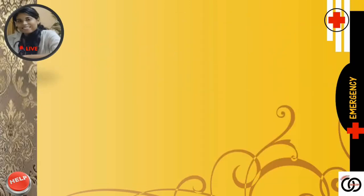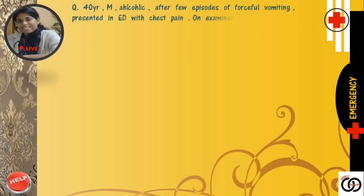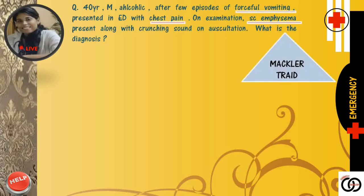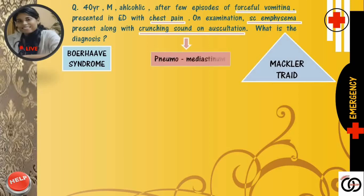Now the last question for today: A 40-year-old male, alcoholic, after few episodes of forceful vomiting, presented in the emergency department with chest pain. On examination, subcutaneous emphysema was present along with crunching sound on auscultation. What's the diagnosis? The patient is having a typical triad: chest pain, retching and subcutaneous emphysema — that is typical of Boerhaave syndrome. Here the esophagus ruptures, leading to pneumomediastinum, meaning free air is present in the mediastinum. Please note the initial investigation would be chest X-ray, but the investigation of choice to look for presence of air anywhere is CT scan.